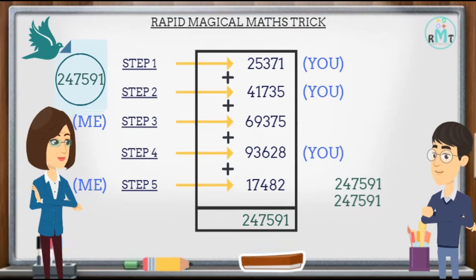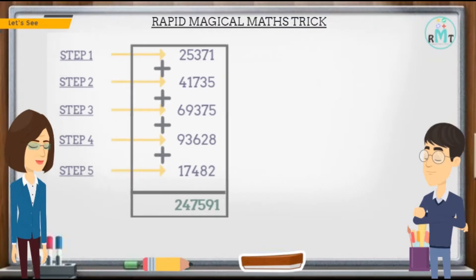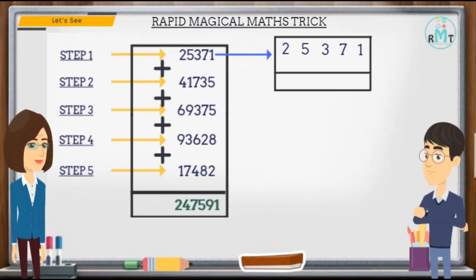Yes ma'am, both are the same. But how did you know the answer before the second step? What is the trick behind this? Let's see. You only mind the first digit your friend writes, that is 25371.